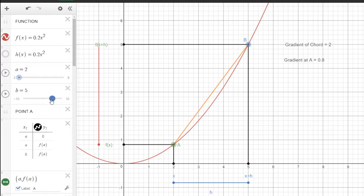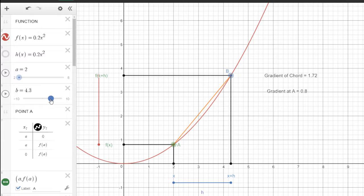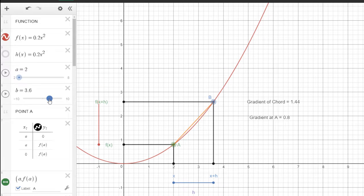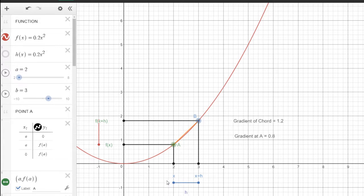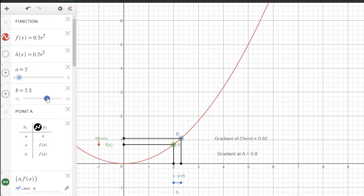As I bring that down, you'll see that the gradient of that chord starts getting smaller and smaller. It's now 1.72. And it'll get smaller and smaller, 1.44. And as the value h there tends towards 0, we will actually get it tended towards the actual value of the chord. So it's at 0.92 now.